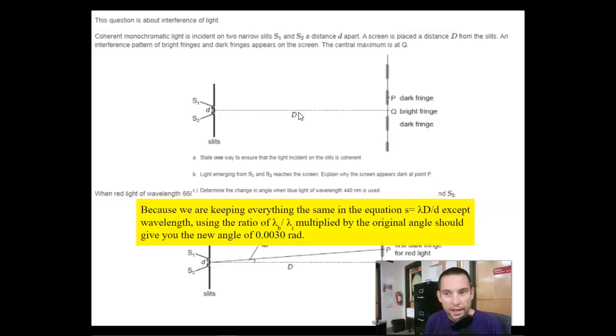Because we're keeping everything in the equation the same, we can just use a ratio of the wavelengths, and then use that ratio multiplied by the original angle to give you the new angle, 0.003 rads. Do not forget about ratios. If you're comparing two things, use a ratio.